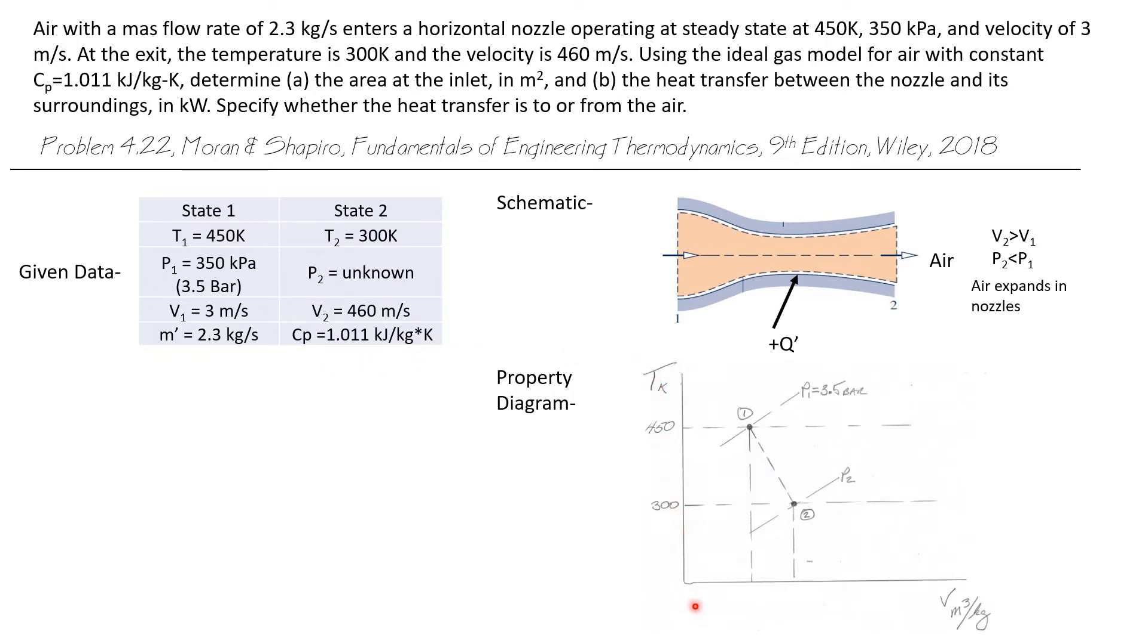Let's draw a property diagram—temperature versus specific volume. We know that air is a gas, and at state one, the temperature is 450 Kelvin and the pressure is 3.5 bar. State two is at a lower temperature, 300 Kelvin. The pressure is unknown.